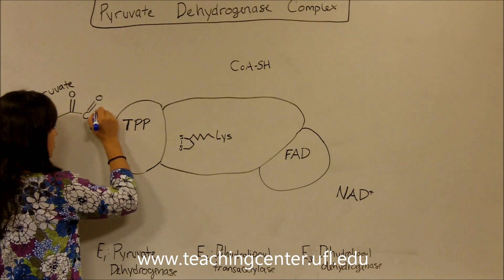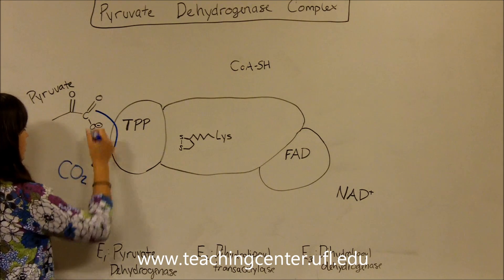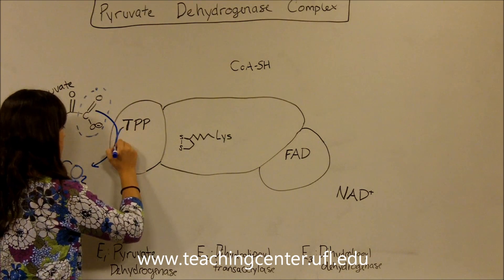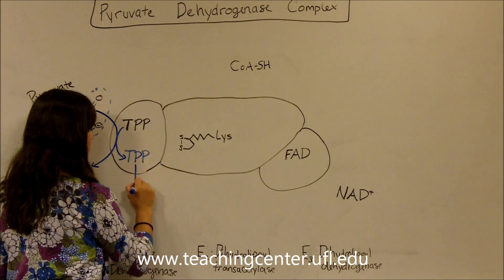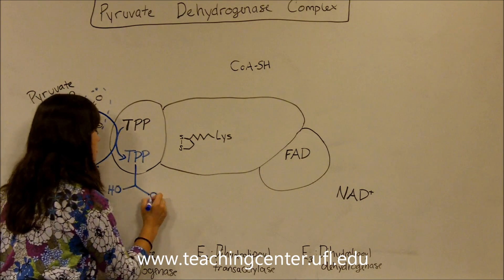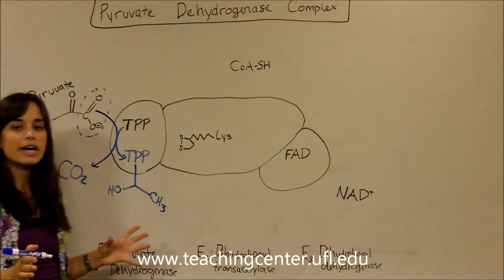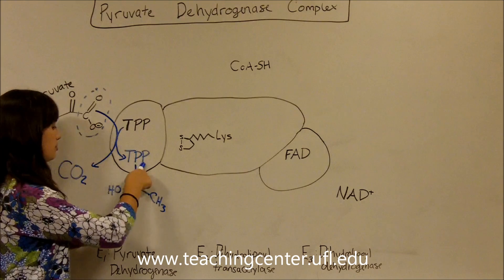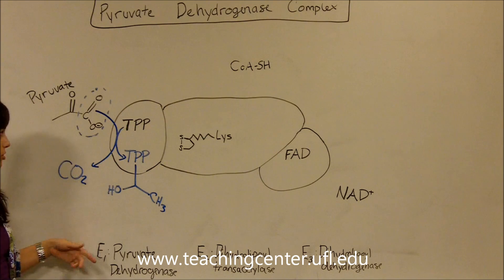So what we're going to see formed here is that CO2 leaving, and we're also going to see formation of your hydroxyethyl-TPP, which looks like this — just a methyl group over here. So now you have part of the pyruvate bound here to your TPP and overall to your pyruvate dehydrogenase complex, and we've already eliminated the CO2 that we needed to eliminate.